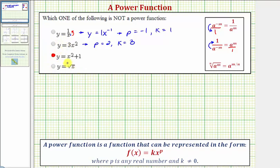Let's also take a look at our last function, where we have y equals the square root of x. Again, in its current form, this does not appear to be a power function, but we can rewrite a radical using rational exponents, using the property given here, where the nth root of a raised to the power of m is equal to a raised to the power of m over n, or m divided by n. So the index gives us the denominator, and the exponent gives us the numerator.